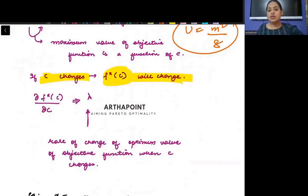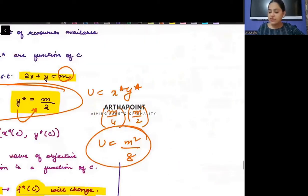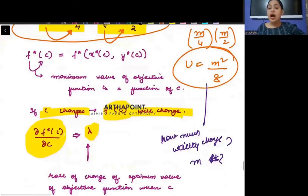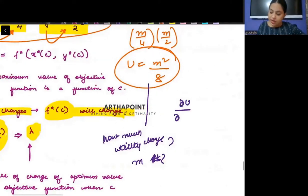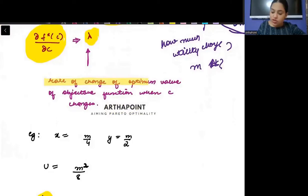What is lambda telling us? It tells us how much does this F*(C) change when C changes. In other words, in terms of our example, how much will my utility change when my income changes? So you see here that when my income increases, I am on a higher indifference curve. That means I am able to go ahead and increase my utility. So here, how much will my utility change when my income changes, that is basically told by the lambda or the multiplier.